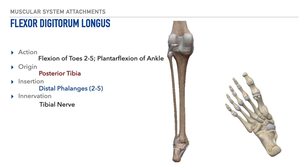Next is the flexor digitorum longus. Its action is flexion of toes 2 through 5, along with inversion of the foot and plantar flexion of the ankle. Its origin is on the posterior tibia. Its insertion is on the distal phalanges 2 through 5, shown here on the plantar surface of the foot. Its innervation is the tibial nerve.